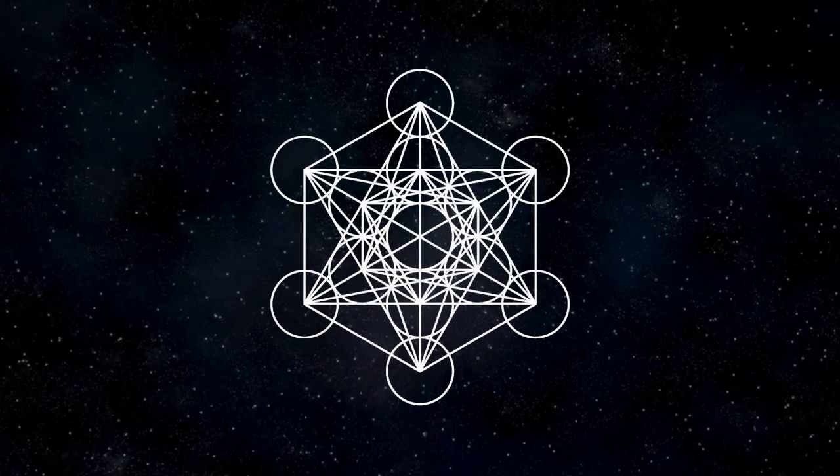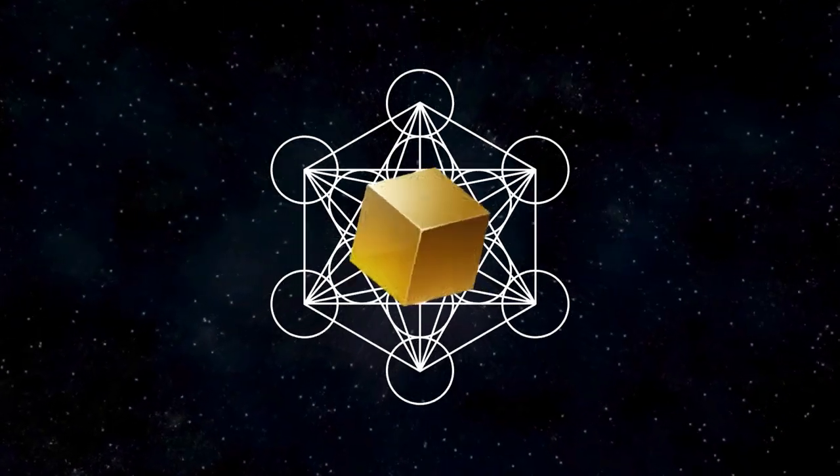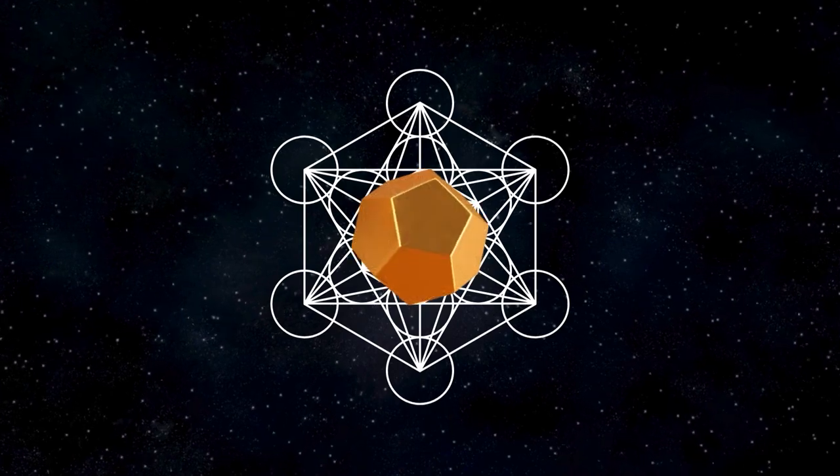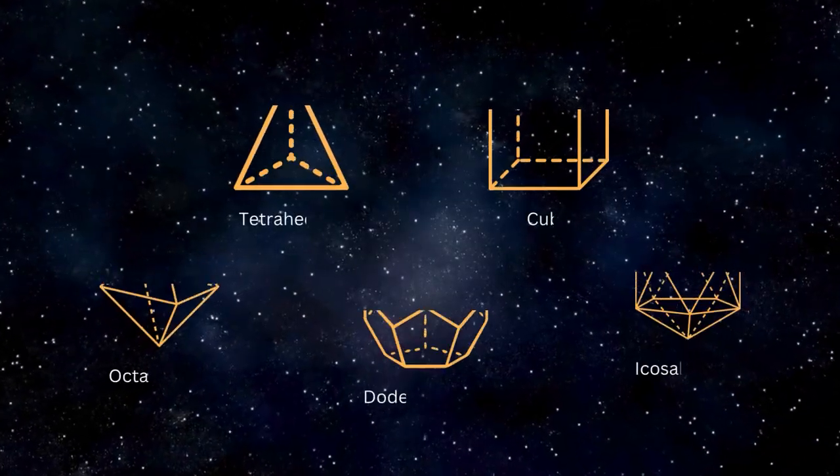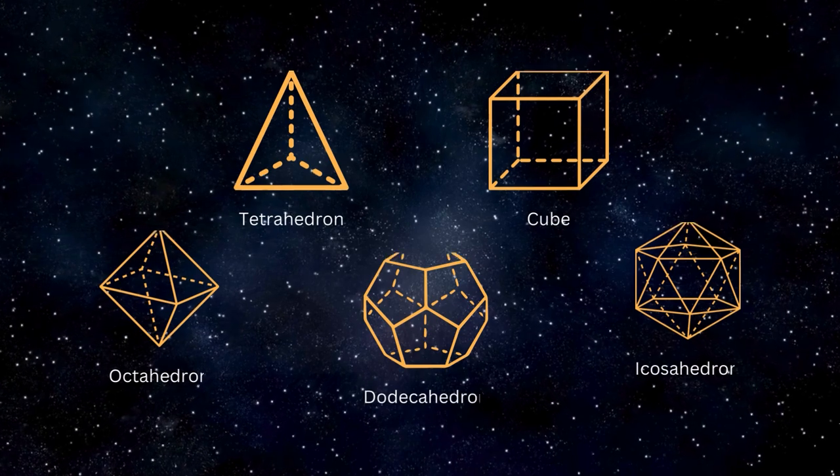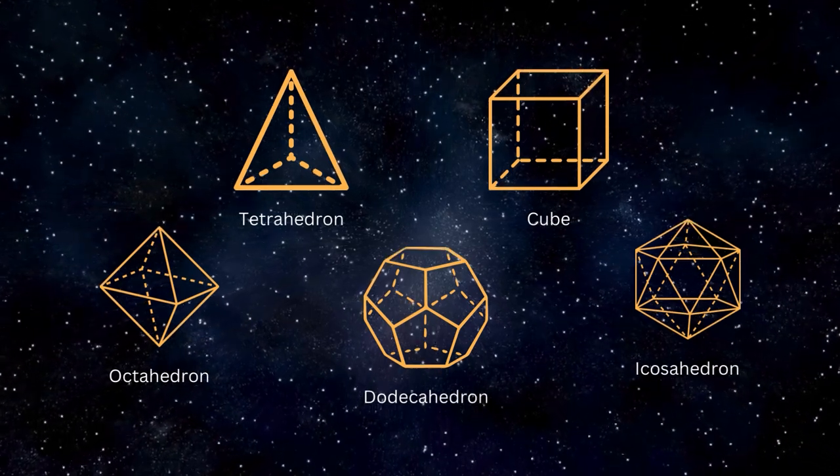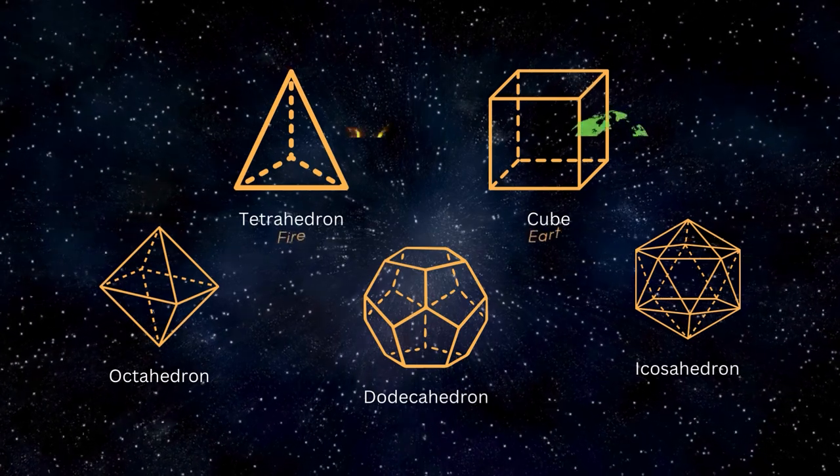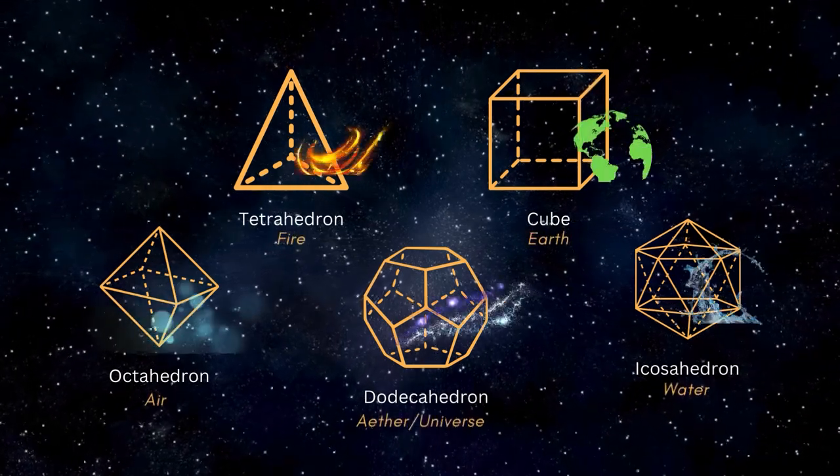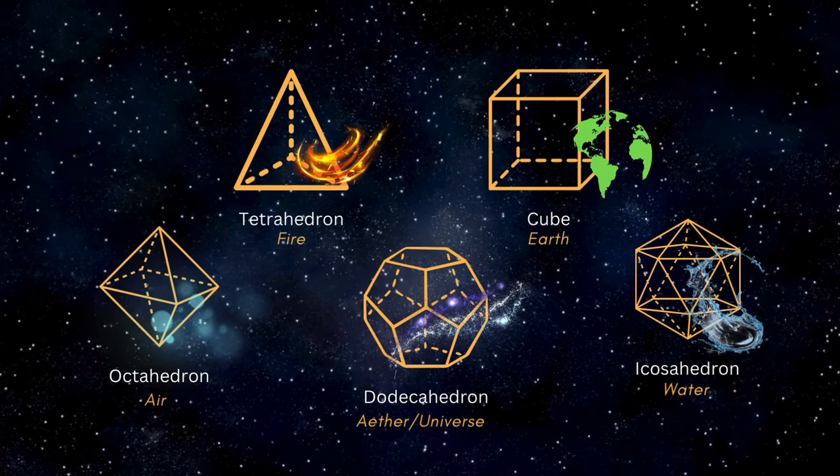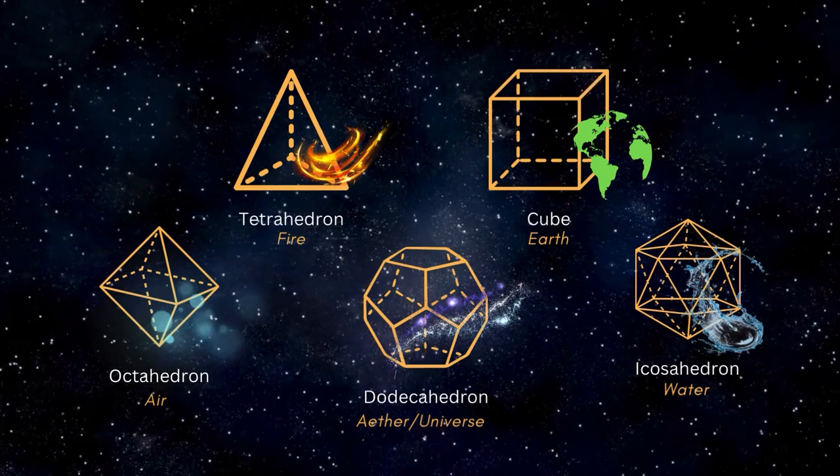These solids, tetrahedron, cube, octahedron, dodecahedron, and icosahedron, are the only perfectly symmetrical three-dimensional forms that occur naturally in the mathematical constants of the universe. The platonic solids represent the elements, which are fire, earth, water, air, and ether, or the universe.